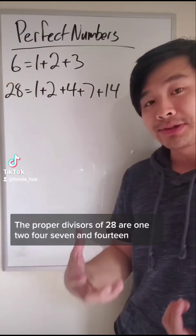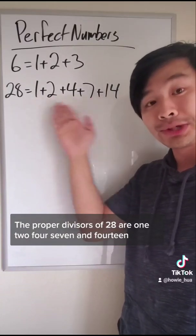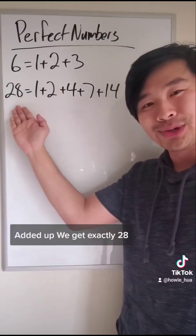The proper divisors of 28 are 1, 2, 4, 7, and 14. Add it up, we get exactly 28.